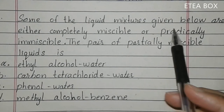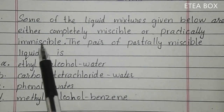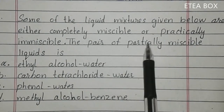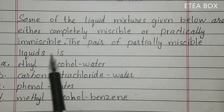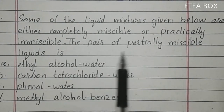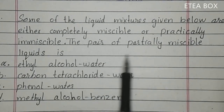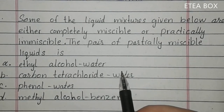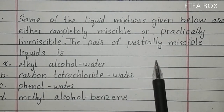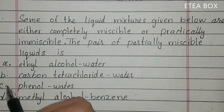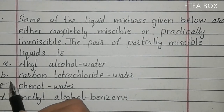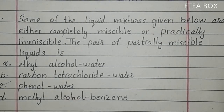MCQ 16: some liquid mixtures are either completely miscible or partially miscible. The pair of partially miscible liquid is phenol-water system. Phenol-water system is partially miscible. Option C is correct. These examples are present in your book.